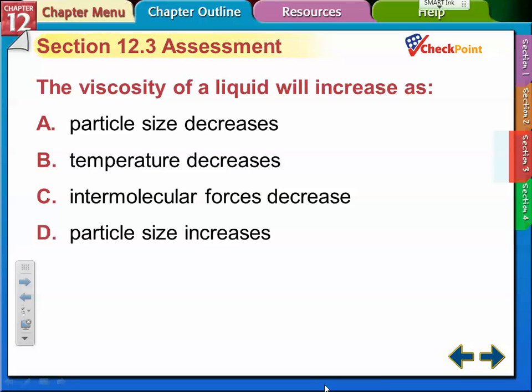The viscosity of a liquid will increase as - which makes it increase? These are all decreasing except particle size. So which one would it be? The temperature decreases, it gets thicker. Particle size decreases, they move over each other easier. Bigger particles, more viscous. So it's got to be D. Particle size increases. I was thinking of decrease for some reason.